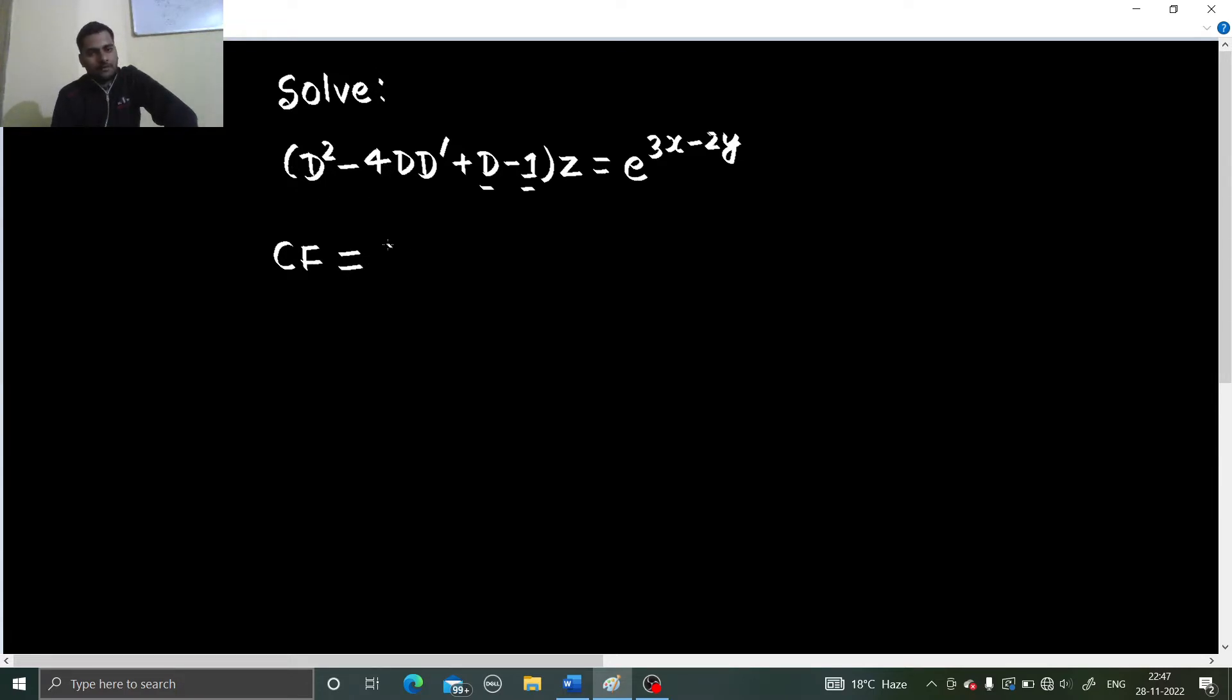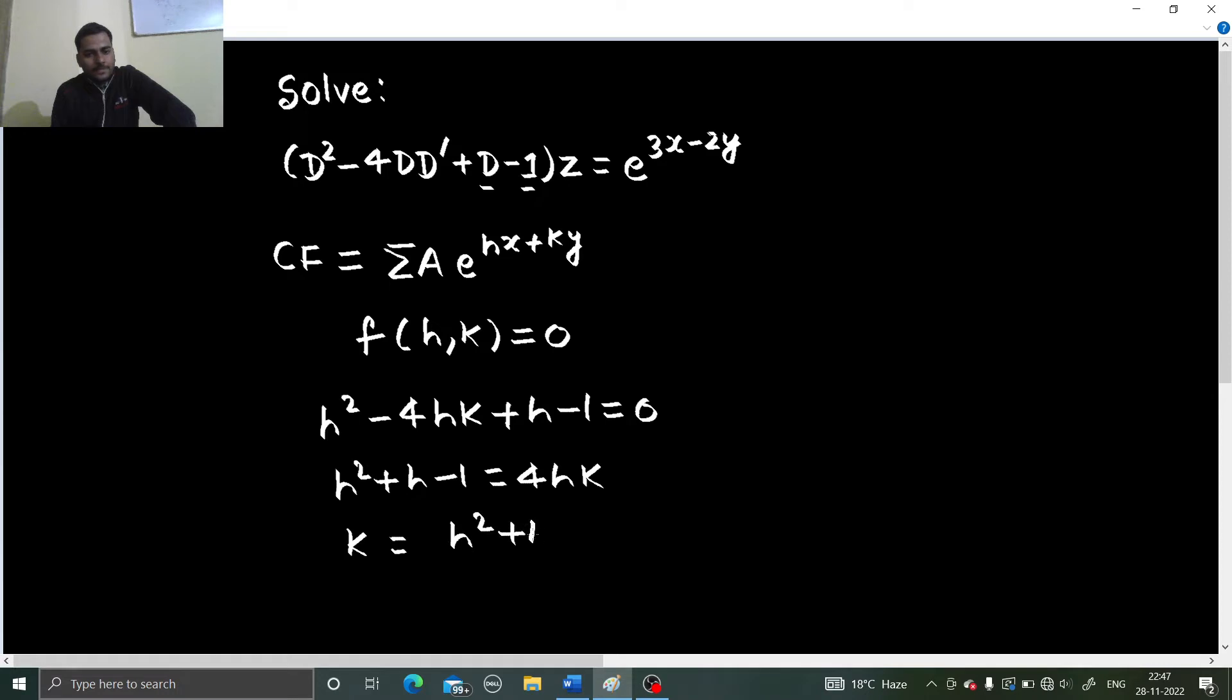So we can write our complementary function as summation a e power hx plus ky and there is a relation between h and k which we can extract from the problem itself. Put d as h and d dash as k. 4 hk, h minus 1 equals to 0. So h square plus h minus 1 equals to 4 hk or k you can find as h square plus h minus 1 divided by 4 h.